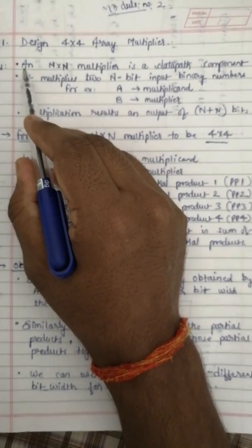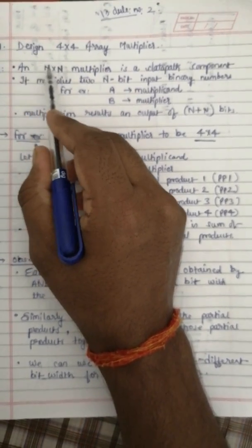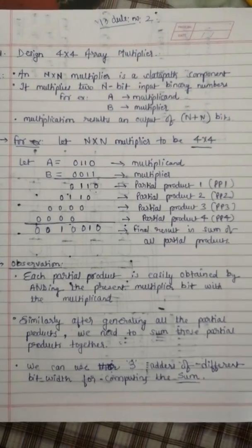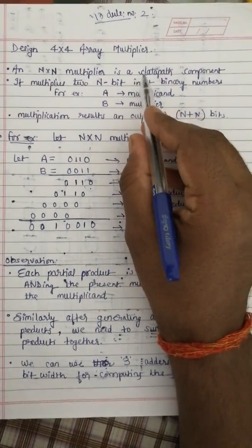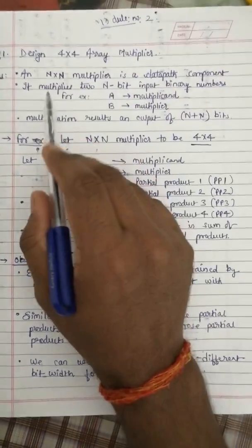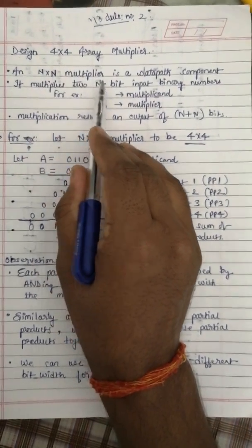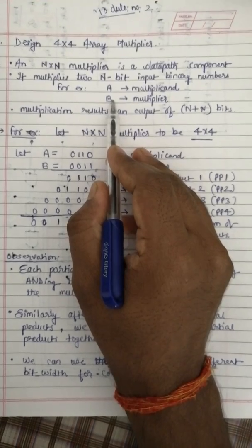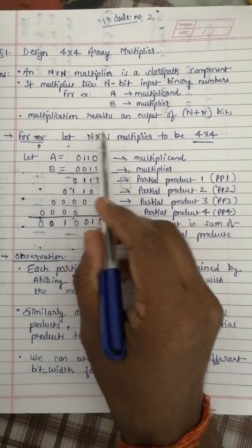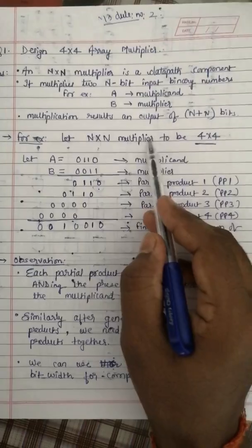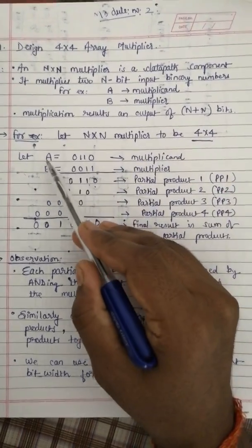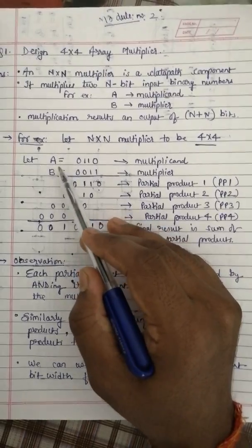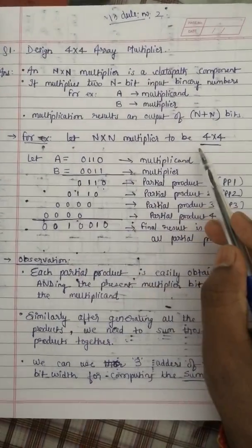For example, let's say if a multiplier is of an order n by n. Basically, a multiplier is nothing but a datapath component that multiplies two n-bit input binary numbers, for example A and B. Suppose n by n multiply is 4 by 4, meaning A and B both are of 4 bits each. A is called the multiplicand.